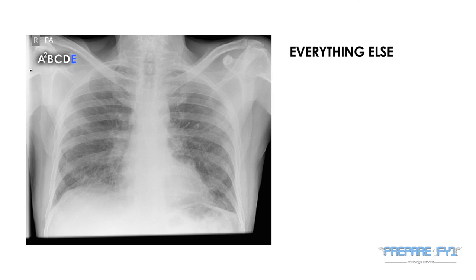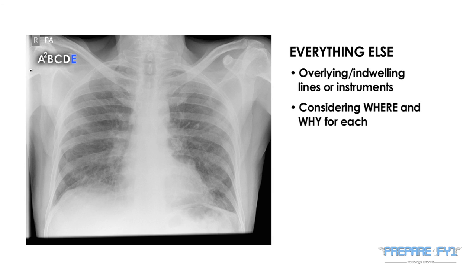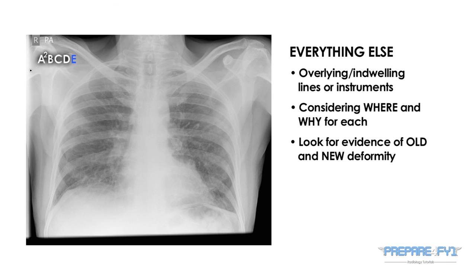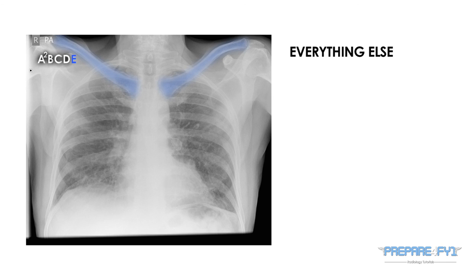E stands for everything else. You should look on the radiograph for any overlying or indwelling lines or instruments, to see where they lie and their potential purpose. These may include central venous catheters, chest drains, nasogastric tubes, pacing wires, pacemakers, and sternal wires. The latter may be evidence of previous thoracotomy. You should also look at the skeletal structure for evidence of old and new fractures or deformity, including the clavicles and ribs. You can also look for abnormalities in the soft tissue surrounding the thorax, which may include surgical emphysema.